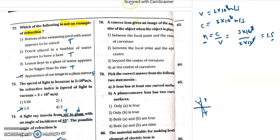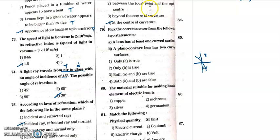Question 78: a convex lens gives an image of the same size as the object when the object is placed at 2F — at twice the focal length. If you want to see the same size image, the object must be placed at 2F.